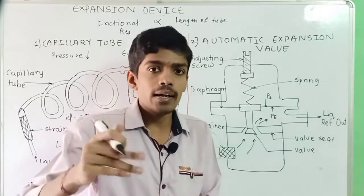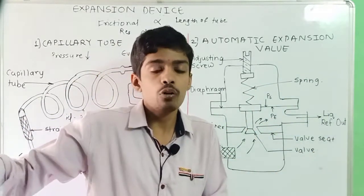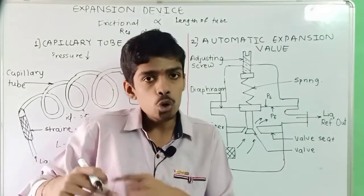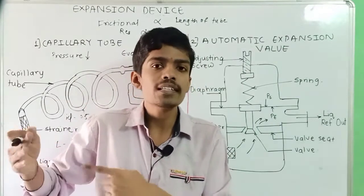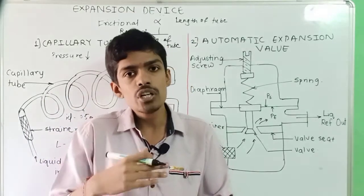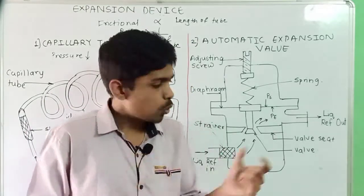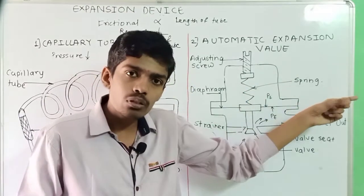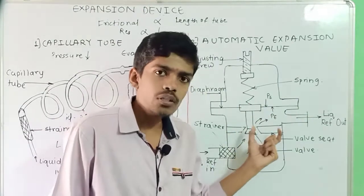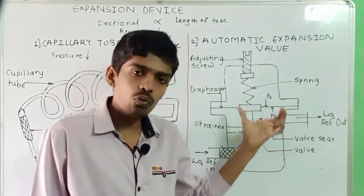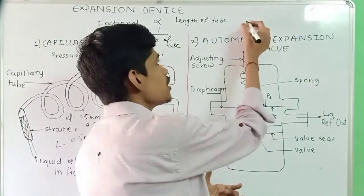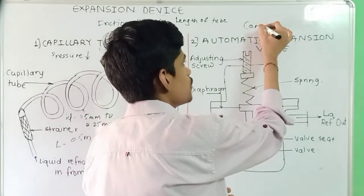When the load on the evaporator increases, pressure also increases. When the load on the evaporator decreases, pressure also decreases. So the opening and closing of this valve depends upon that condition. This valve is also known as a Constant Pressure Expansion Valve.